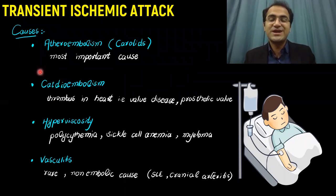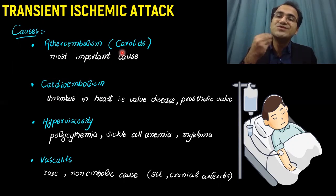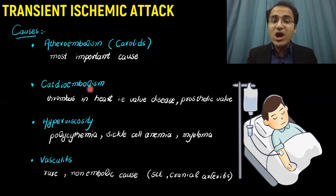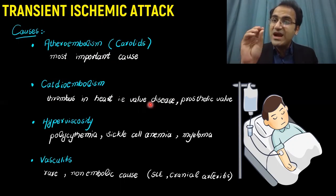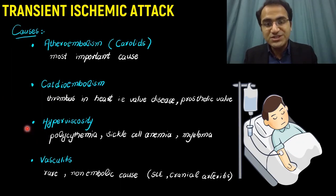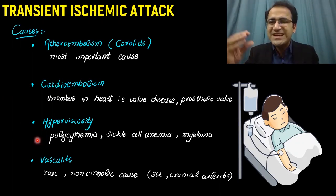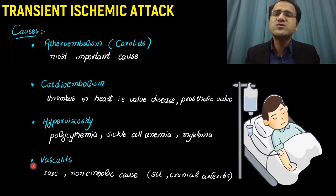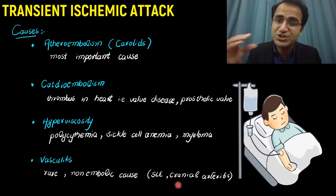Coming to the causes of transient ischemic attack. The most important cause is atheroembolism — there are atheromas and plaque or fat deposition in the carotid arteries, and that fat gets dislodged, enters the brain, and blocks arteries within the brain. Cardioembolism is another cause — valvular disease or infective endocarditis leads to clot formation in the heart, and those clots get dislodged and lodge in the brain arteries. Hyperviscosity is also important, occurring in polycythemia, sickle cell anemia, and multiple myeloma. Vasculitis is a rare non-embolic cause seen in SLE and cranial arteritis. Remember atheroembolism and cardioembolism as the two most important causes.